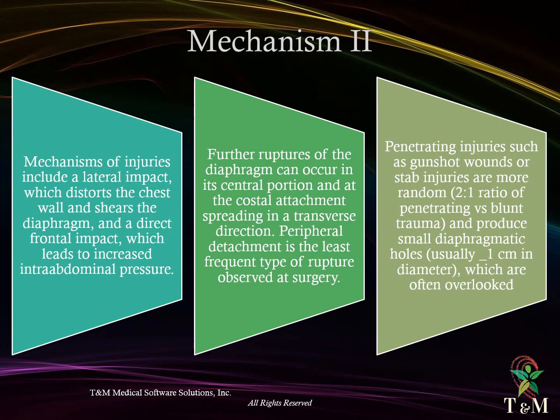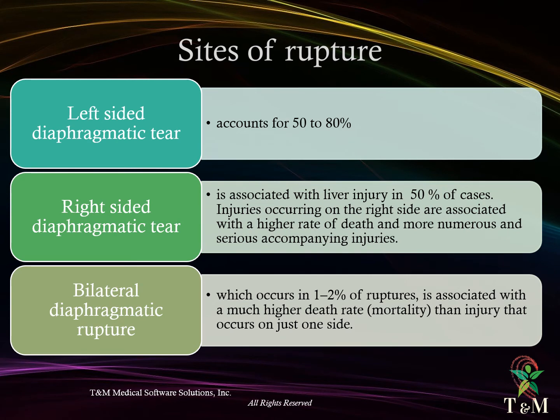Mechanisms of injury include a lateral impact, which distorts the chest wall and shears the diaphragm, and a direct frontal impact, which leads to increased intra-abdominal pressure. Further ruptures of the diaphragm can occur in its central tendon and at the costal attachment, spreading in a transverse direction. Peripheral detachment is the least frequent type of rupture observed at surgery. Penetrating injuries such as gunshot wounds or stab injuries are more random and produce small diaphragmatic holes, usually 1 cm in diameter, which are often overlooked.